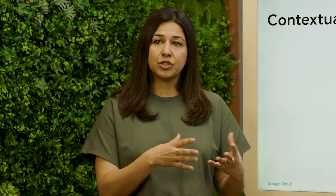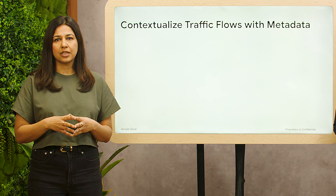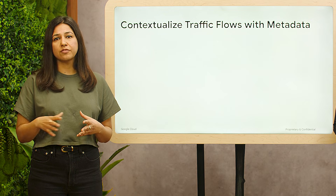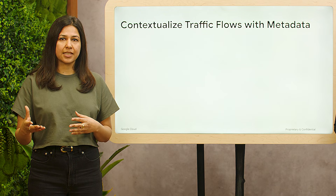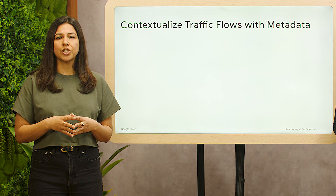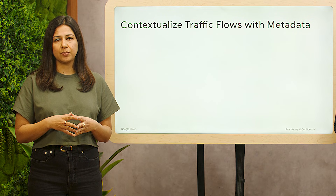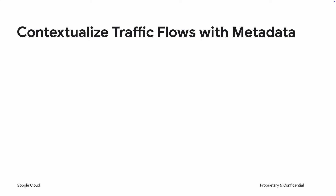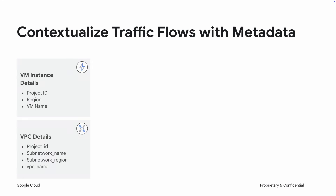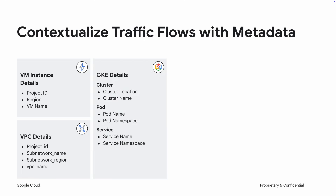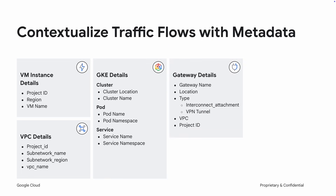In addition to the five-tuple, VPC flow logs also provides valuable context through metadata annotations. These annotations transform raw log data into actionable insights. For example, instead of just showing you the source IP address of a VM within GCP, flow logs can also reveal the VM's name, region, project ID, and VPC details. For GKE workloads, you'll find information about the cluster, pod, and services involved. For hybrid or cross-cloud scenarios, you can infer the names, location, and other details of the interconnect attachments and VPN tunnels used via traffic flow.